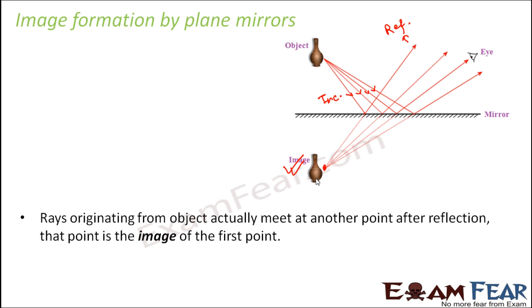We can say that the rays originating from object actually meet at another point after reflection. That point is the image of the first point. Basically whenever you are asked where will the image be formed for this particular object, you will see the point where the reflected rays will meet.